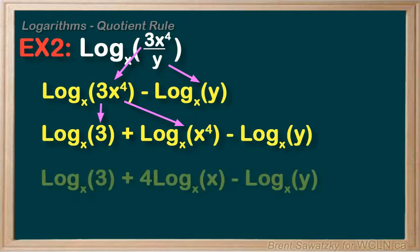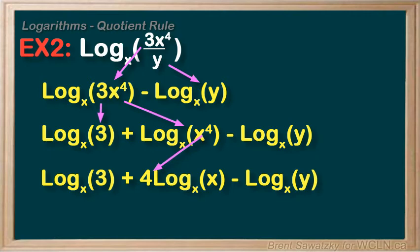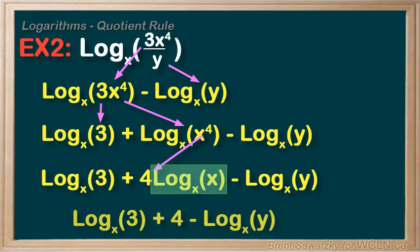We can break it up even further: log base x of 3 plus 4 log base x of x minus log base x of y — using the power rule, powers to multiplication. Then we notice that log base x of x is 1, and that leads to our final answer: log base x of 3 plus 4 minus log base x of y.